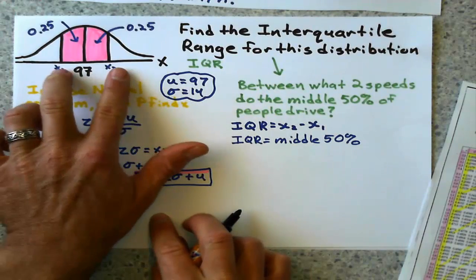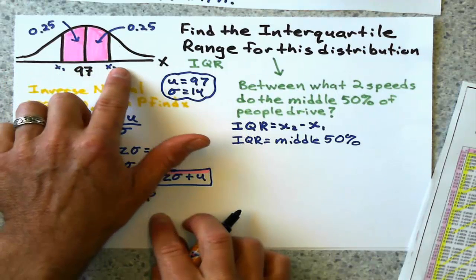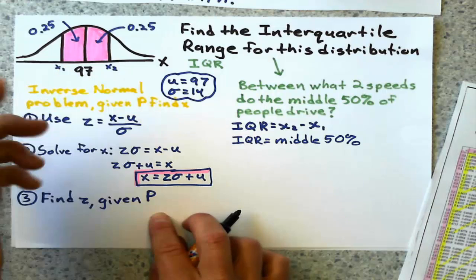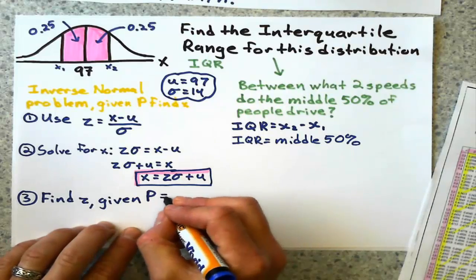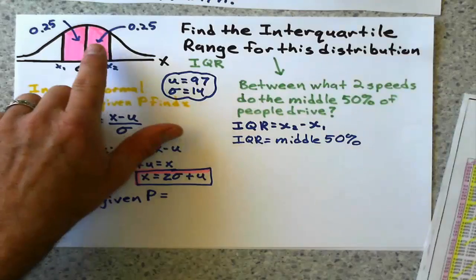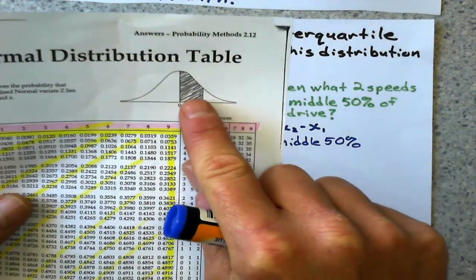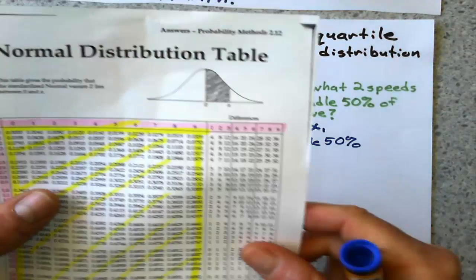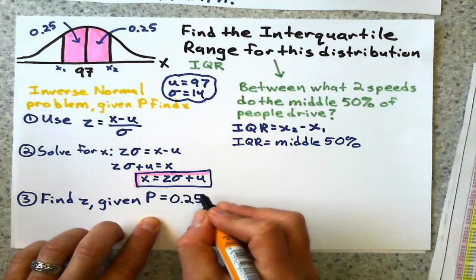Next step is to find the Z value given the probability. I don't need to find both of these Z values because they're going to be the same. This one's going to be a positive Z value and that one's going to be a negative Z value. My probability is 0.5 total, but when I use the Z table, I just want the probability that's one side from the mean, so I'm just going to look at 0.25.